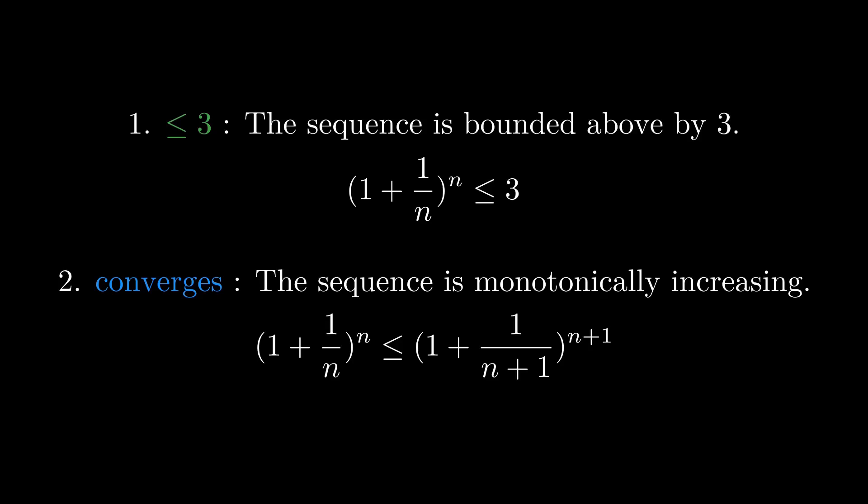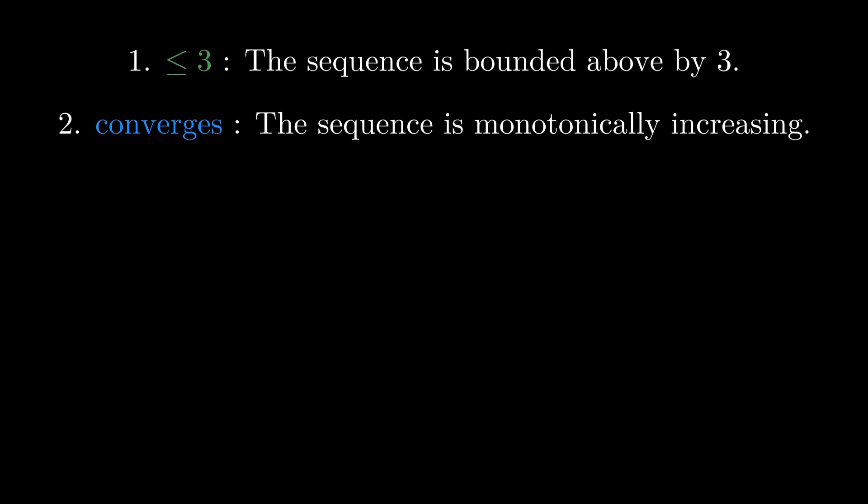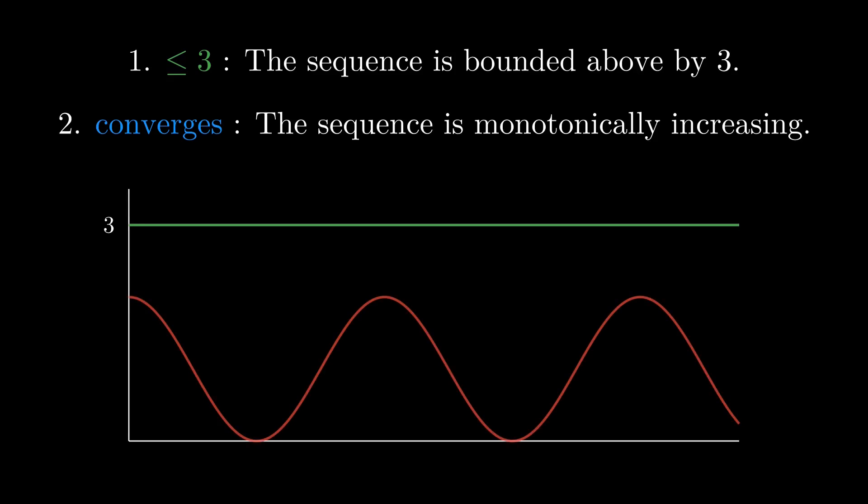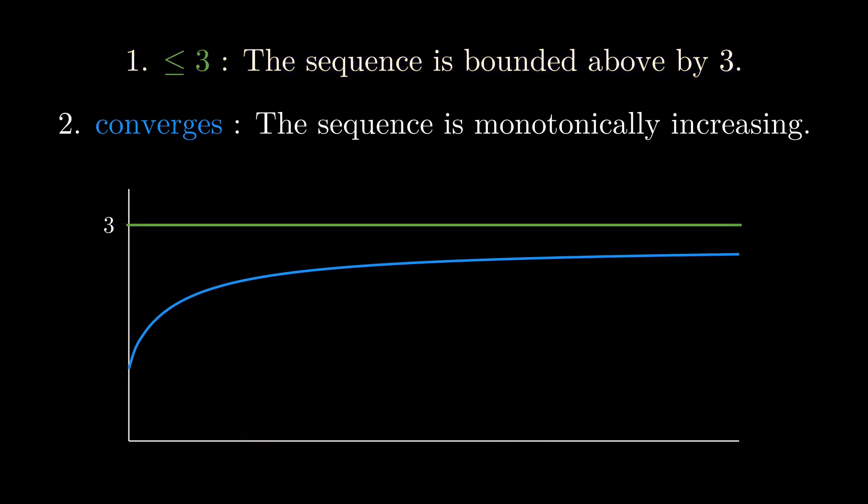You might wonder why we need that second point. Some functions like f of x is sin x are bounded, but never converge to any single value. If we can show that our sequence is both bounded and monotonic, then we know it converges. In other words, if this graph only goes up, but can't pass this line, we know it must converge to something no higher than that line.